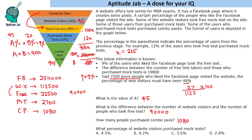2,700 divided by 1,12,500 into 100 comes close to 2.4 percent. Since it obviously looks like two-point-something and there is only one option with two-point-something, that is the answer. That is the solution to the set and the answers to the questions.